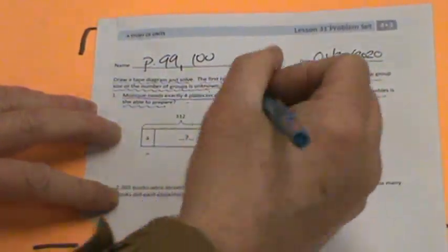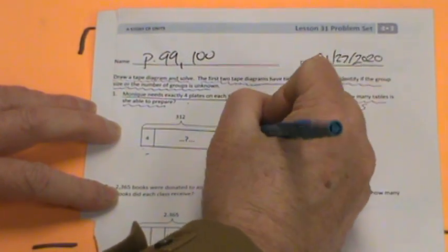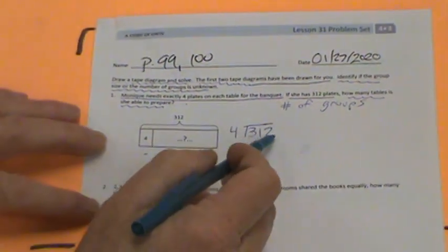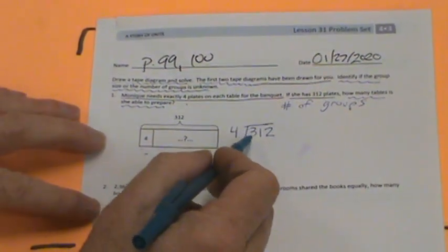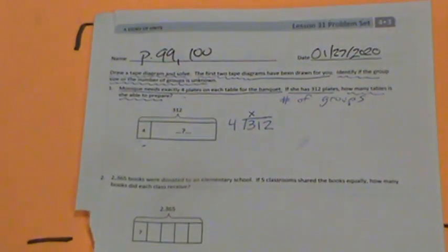So four plates on each table. Let's go ahead and do the standard algorithm. 312 divided by 4. Once again, we have this problem. 3 is smaller than 4, is less than 4. So let's put our x up top there. Now we have to figure out 4 into 31.